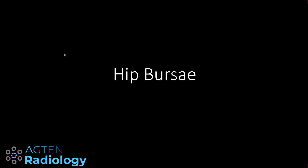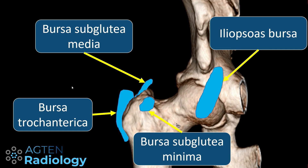There are several bursae around the hip joint. The iliopsoas bursa is the largest one, located just anteriorly to the hip joint.